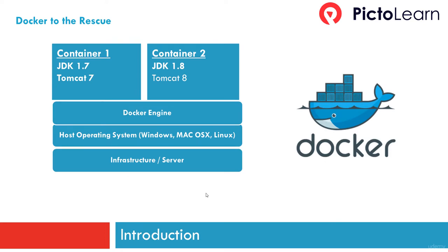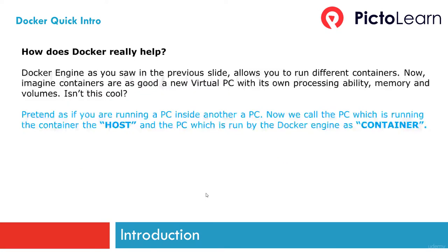To summarize: Docker engine allows you to run different containers — imagine containers as a virtual PC with its own memory, processing ability, and volumes. The PC running the container is called the host, and the PC run by the Docker engine is called the container. The Docker engine allows you to specify port mappings — requests sent to port 5555 will be forwarded to container 1, and requests to port 6666 will be forwarded to container 2.